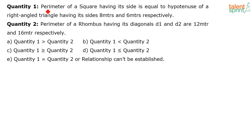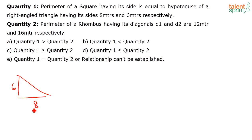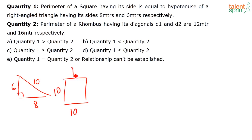Next question: perimeter of a square whose side equals the hypotenuse of a right triangle with sides 8m and 6m, compared to the perimeter of a rhombus with diagonals d1 = 12m and d2 = 16m. For the square: 8² + 6² = 64 + 36 = 100, so the hypotenuse is √100 = 10m. The side of the square is 10m, so the perimeter is 4 × 10 = 40m.